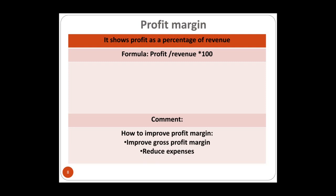The second ratio is profit margin. It is more accurate because it deducts expenses from gross profit to calculate net profit. The question asked is: what is the percentage of net profit out of revenue? If the answer is 10%, that means for every dollar sold the business is making 10 cents as net profit. The formula is profit divided by sales revenue, multiplied by 100.